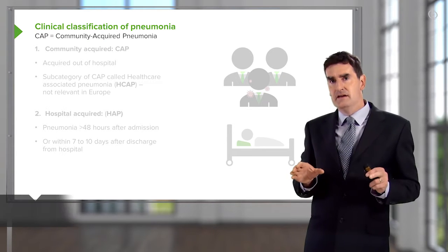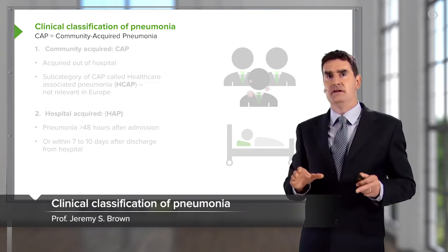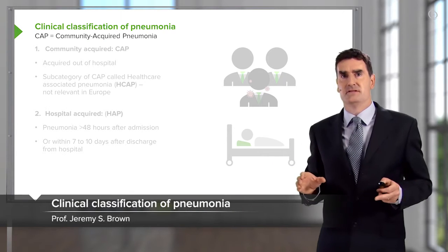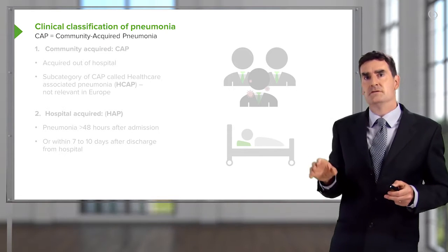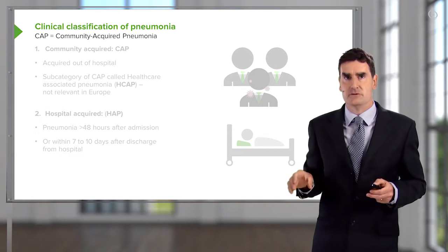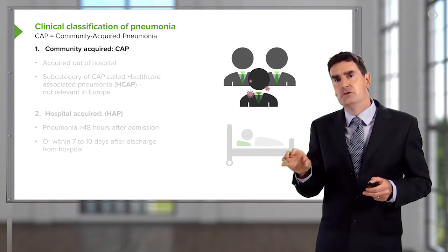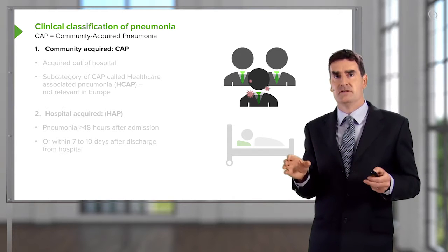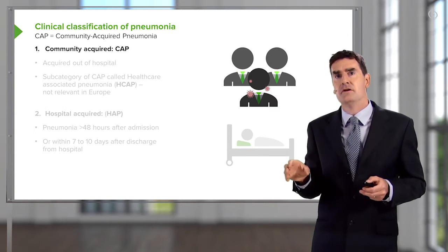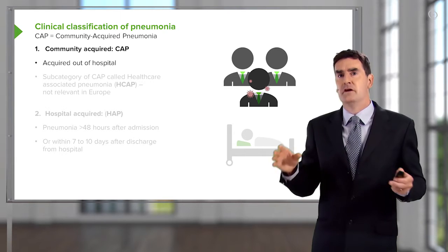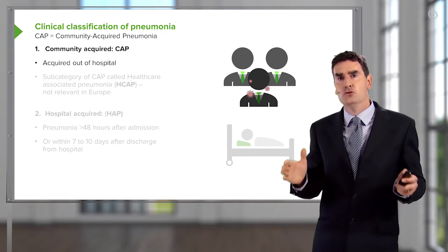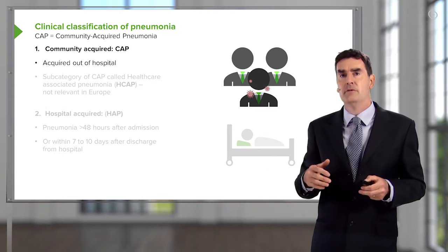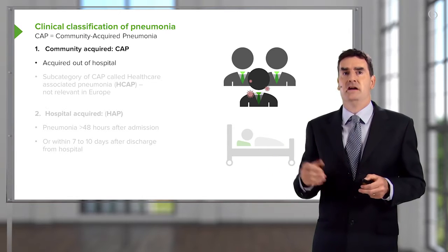Pneumonia is classified into different types. The first and most important, and the subject of most of this talk today, is community-acquired pneumonia. As the name says, it is a pneumonia that is acquired when you're living at home and not in hospital — the normal standard pneumonia that you pick up in your everyday life.